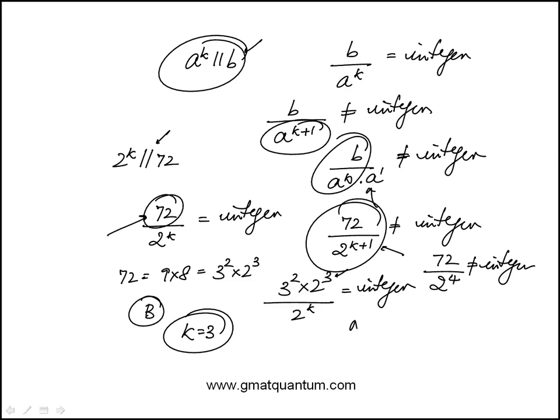But I also want to point out A is actually not the correct answer, and I want to go over that because that's important. A says can k be 2? Well, k can be 2, meaning it will satisfy this condition, but it would not satisfy the second part.